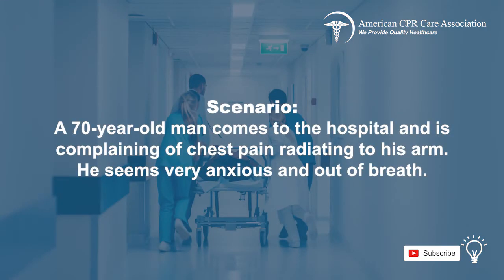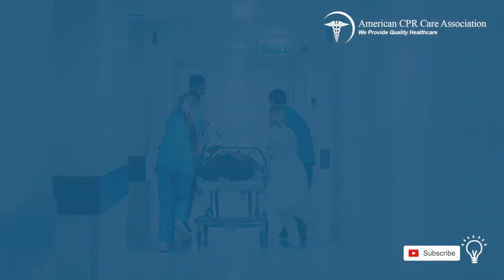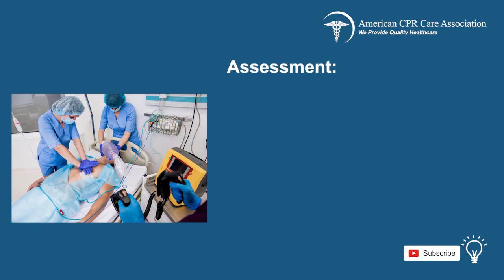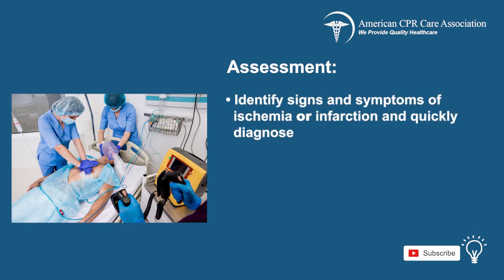A 70-year-old man comes to the hospital complaining of chest pain radiating to his arm. He seems very anxious and out of breath. First, assess the situation. It is important to identify the signs and symptoms of ischemia or infarction and quickly diagnose them.